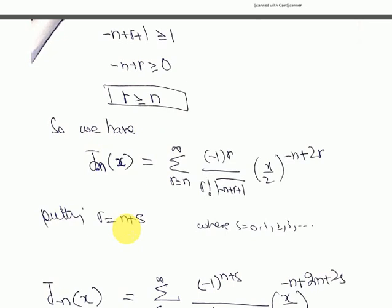Since the non-zero terms start from r = n, we rewrite J(-n)(x) with summation from r = n to infinity. To convert this to a standard form starting from 0, we make the substitution r = n + s, where s = 0, 1, 2, 3, ... When s = 0, r = n; when s = 1, r = n+1; and so on.